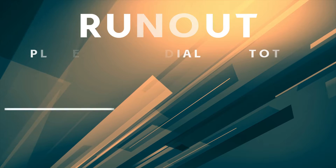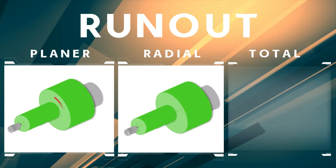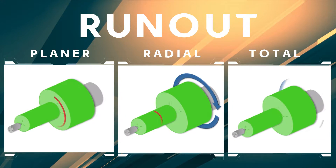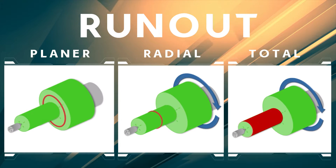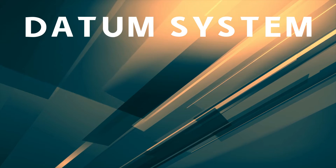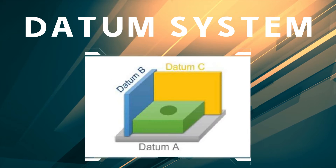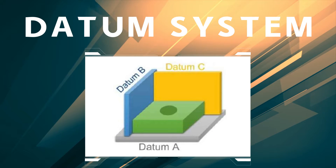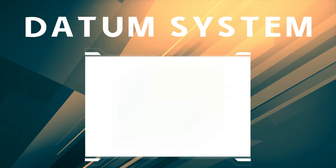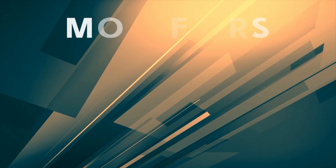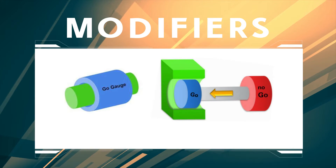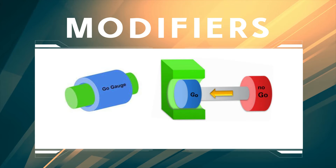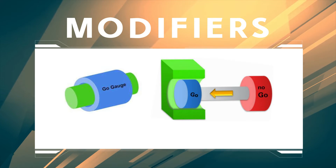We will look at how planar, radial and total run-out tolerances can be used to simulate the rotary motion of parts, and we will understand how to define a datum and datum systems. How to use and understand the different modifiers that can be used to adjust the tolerance zone or modify the tolerated feature.